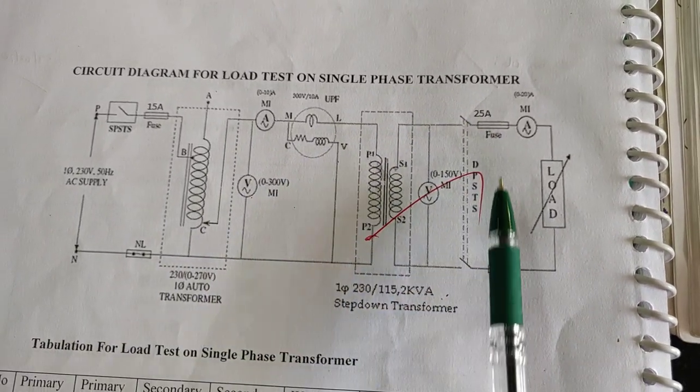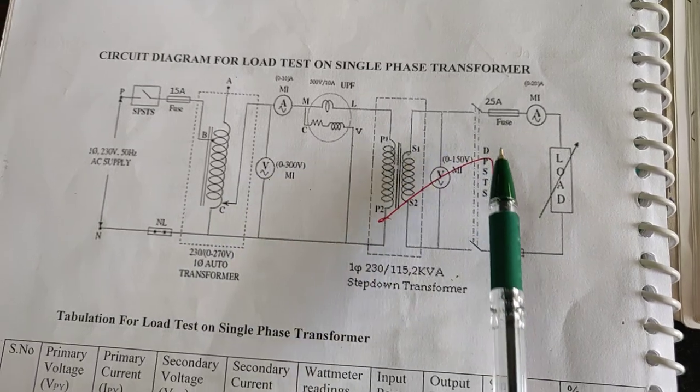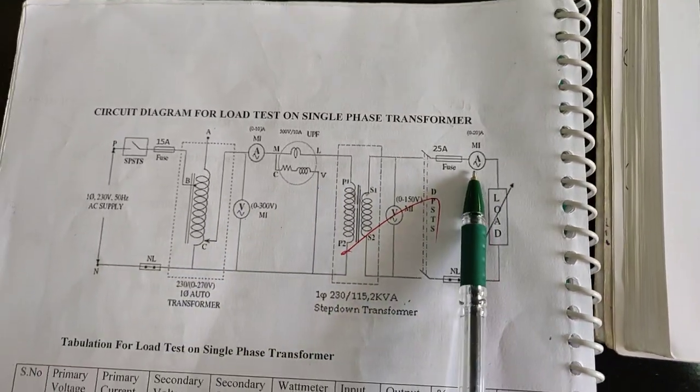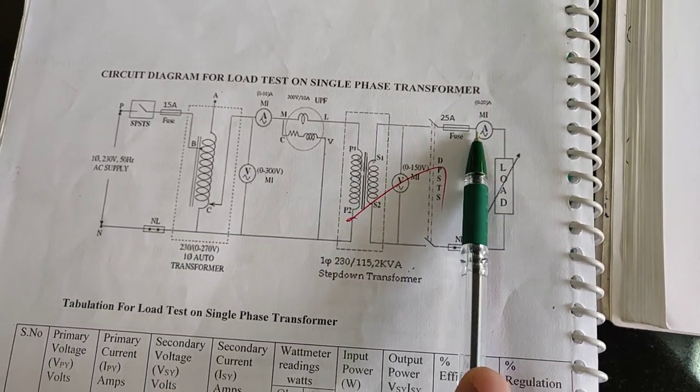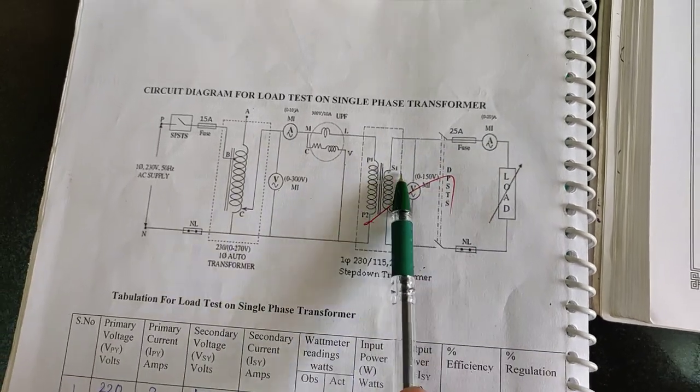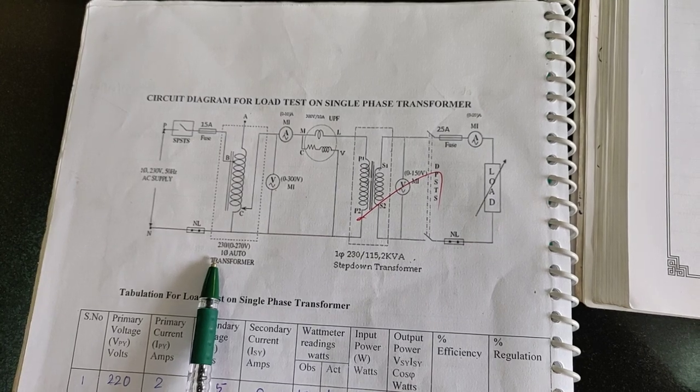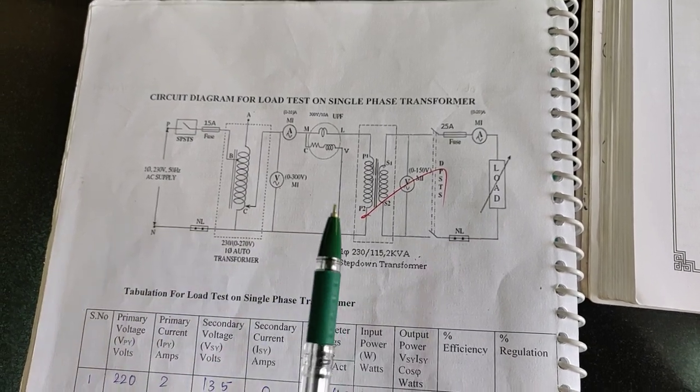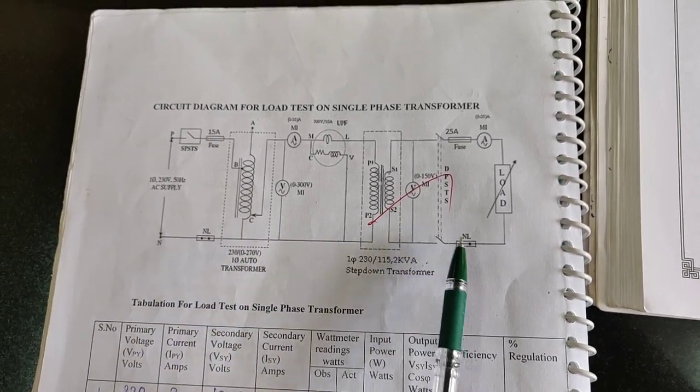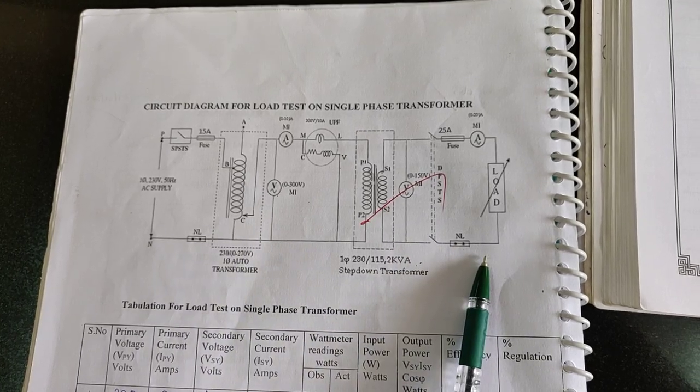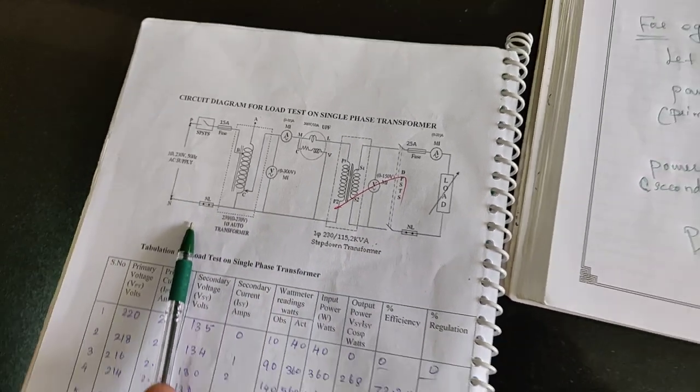This switch is called DPST that is double pole single throw switch. This ammeter is connected in series in order to measure the load current or the secondary current of the transformer. This is about the circuit diagram arrangement of a single phase transformer. Next we will see and go to the next part for continuation of practical video.